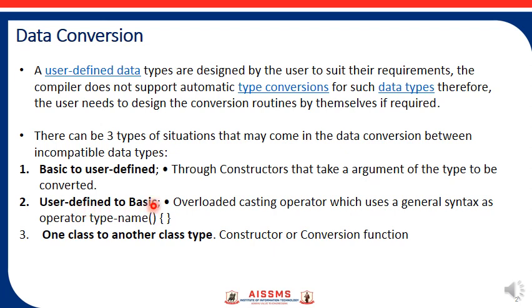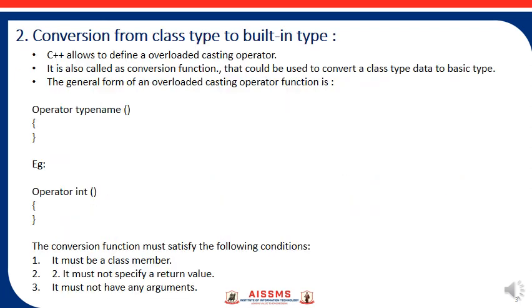Now we will see the operator type syntax. In C++, we can define an overloaded casting operator, also called a conversion function, that can be used to convert class type data to basic type. The general syntax is operator followed by the typename.